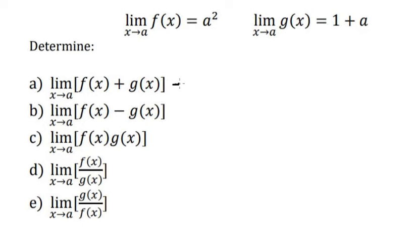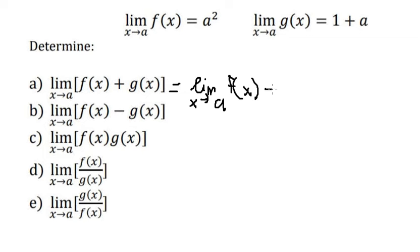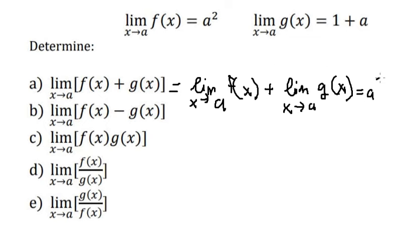In this situation we just write: the limit of s approach to a of f of s, plus the limit of s approach to a of g of s. So this one is about a square, and this one is about one plus a.